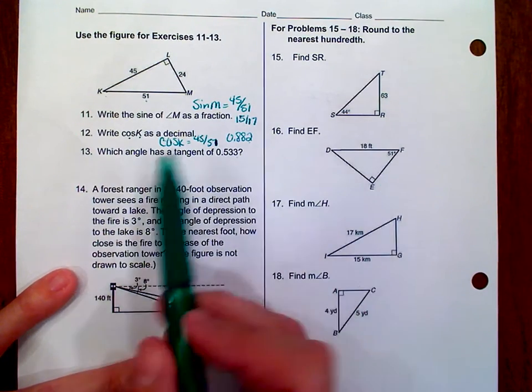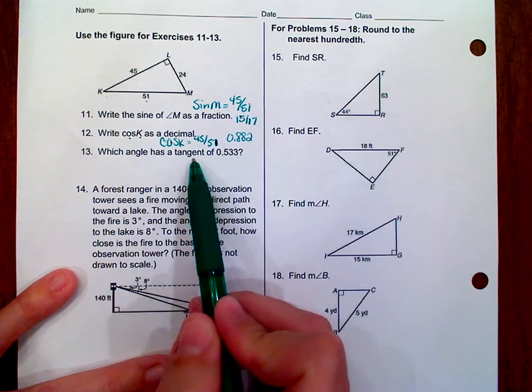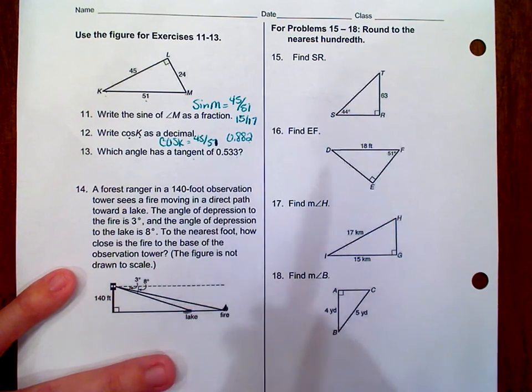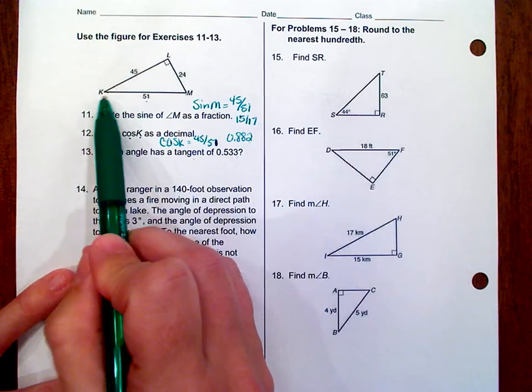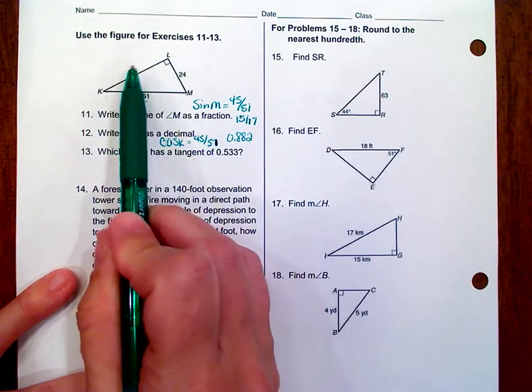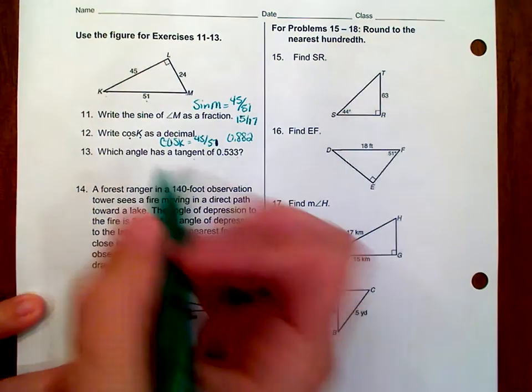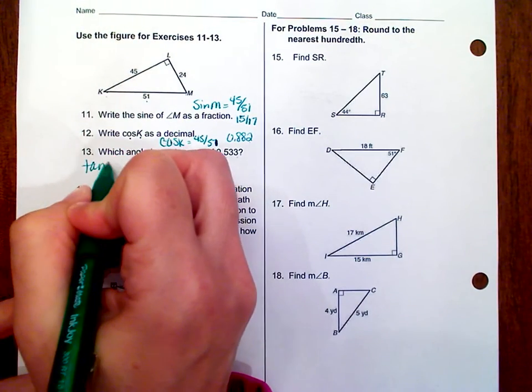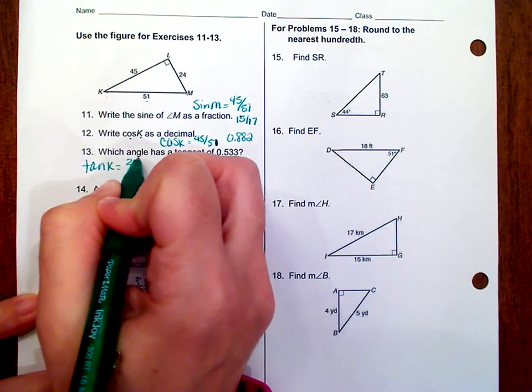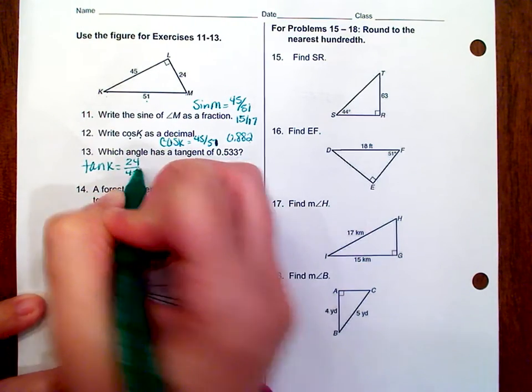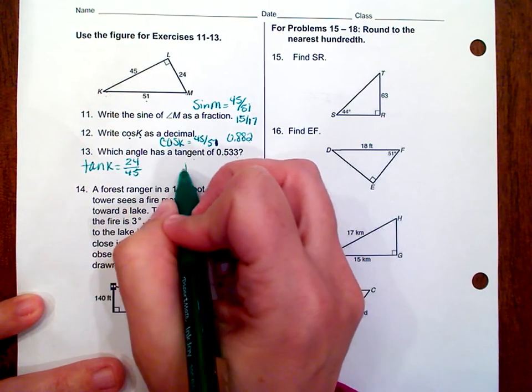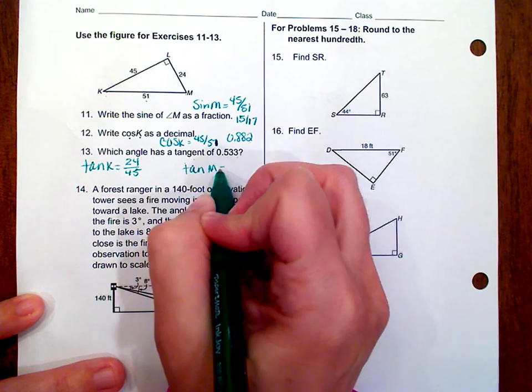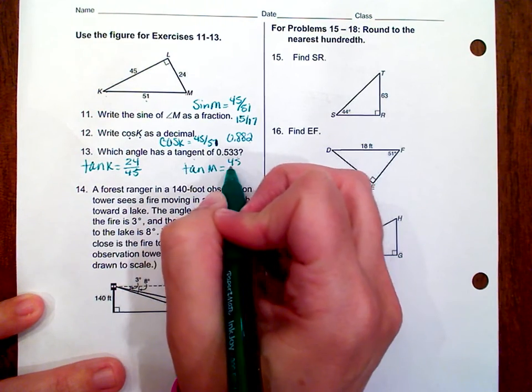On number 13, it says which angle has a tangent of 0.533. So, if we look at angle K, tangent's opposite over adjacent. So, the tangent of K is going to be 24 over 45. And if we look at M, the tangent of M is going to be 45 over 24.